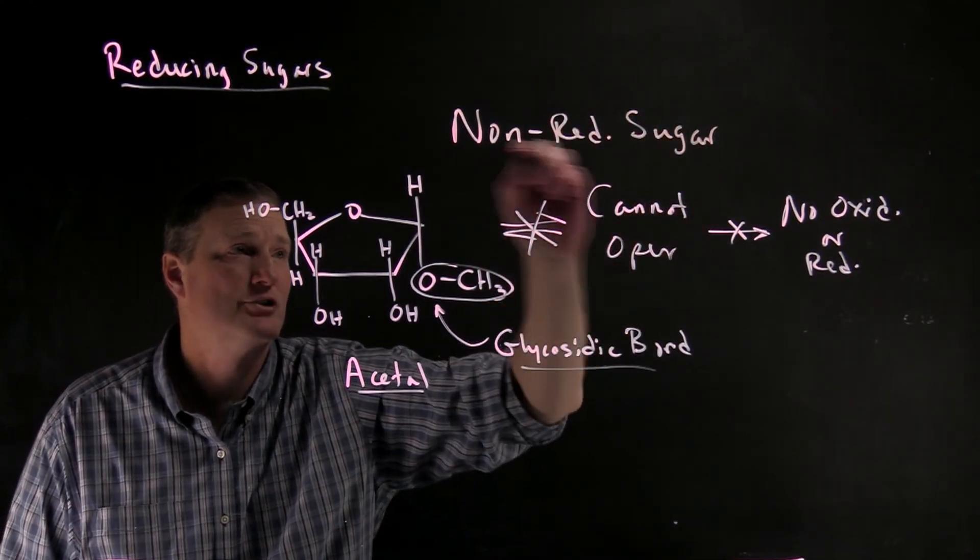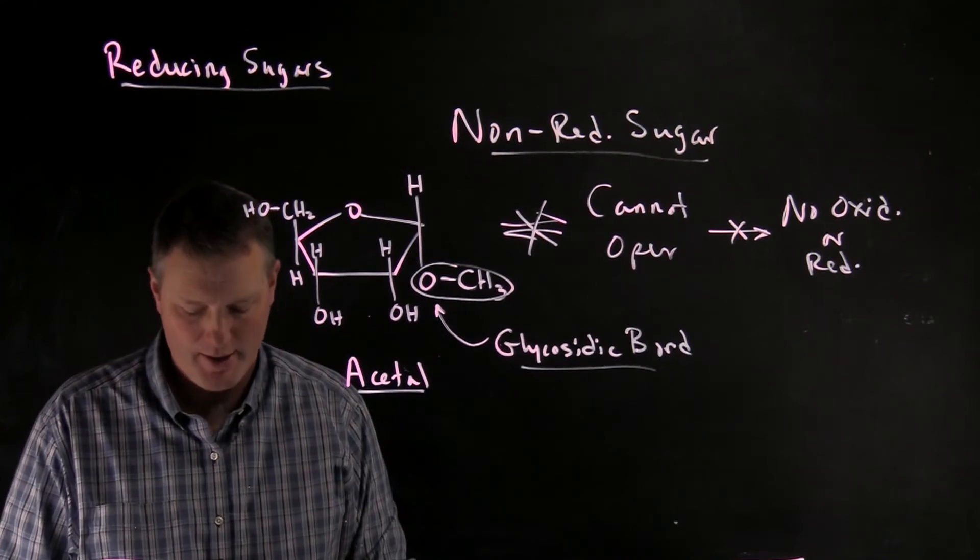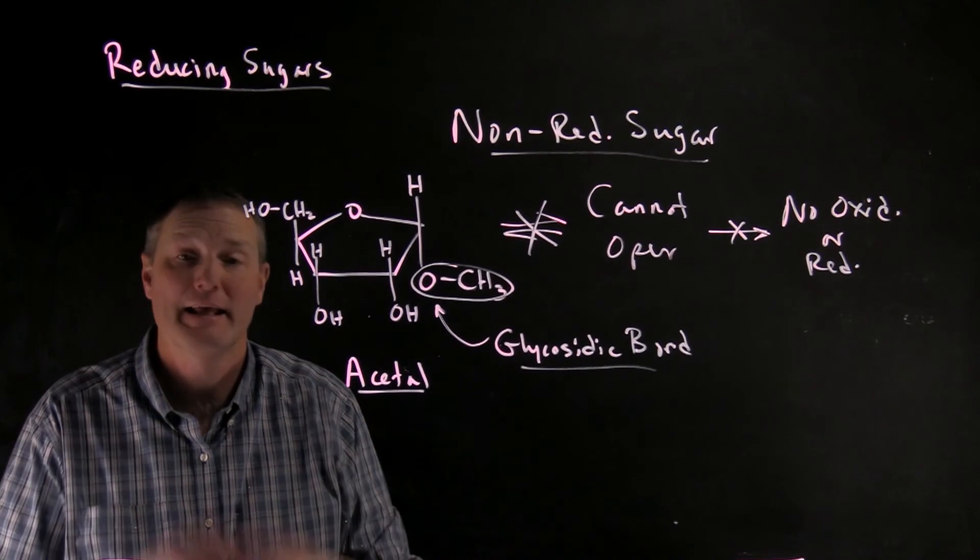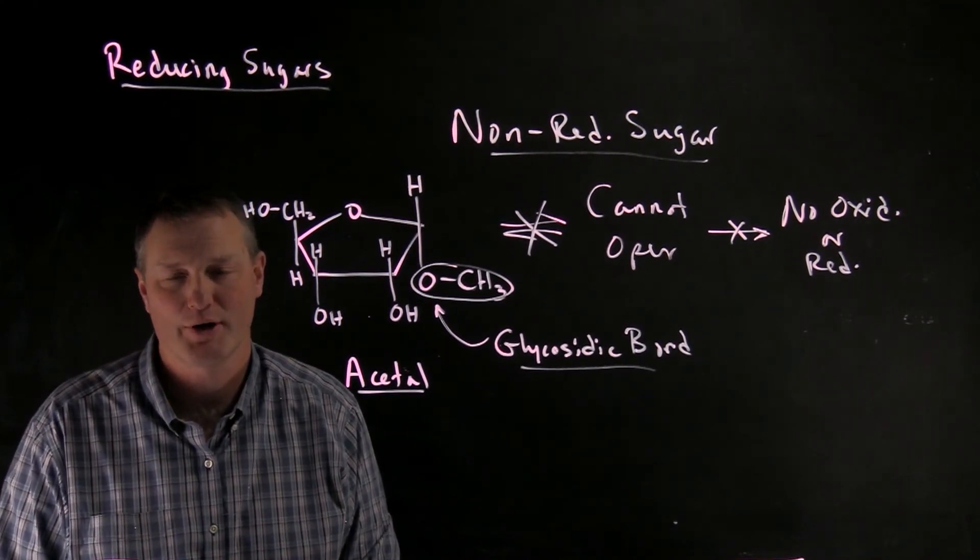So glycosides in general are non-reducing, whereas sugars that can open up if they have a free hydroxyl here at the anomeric carbon, those would be examples of reducing sugars.